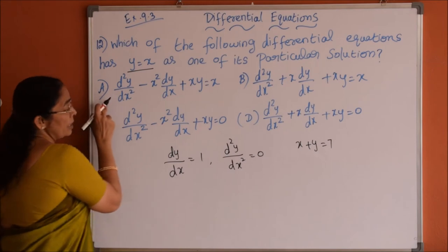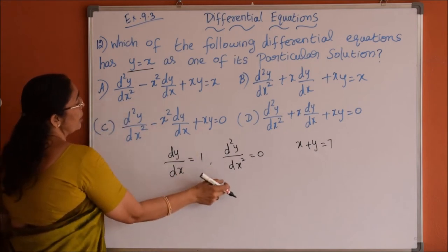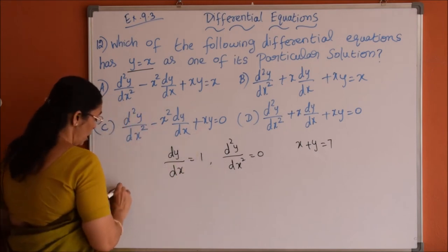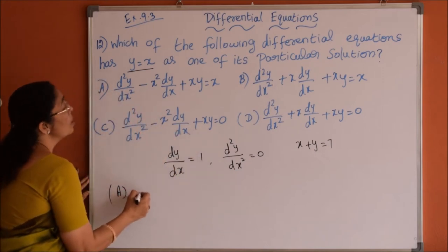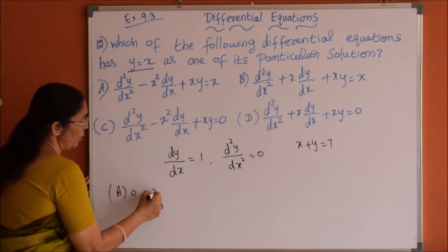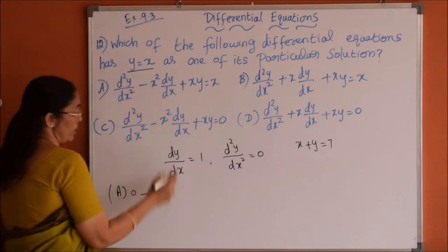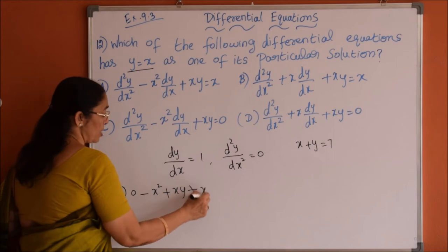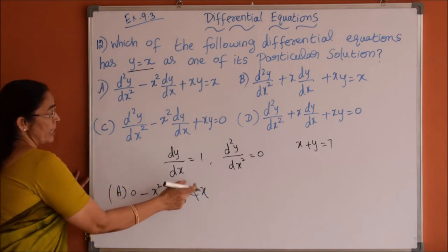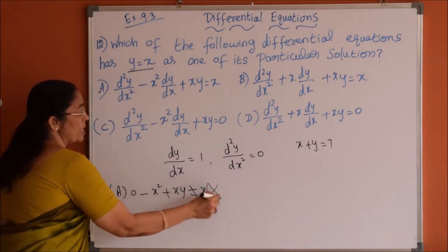In the first one, while substituting in option A, d square y by dx square is 0 minus x square into 1, dy by dx is 1, plus xy. So option A is ruled out.